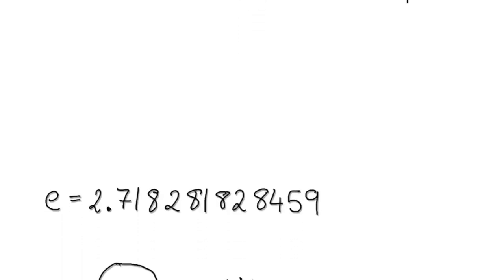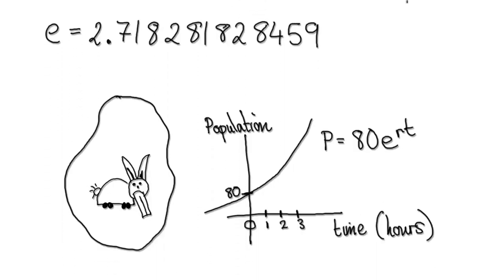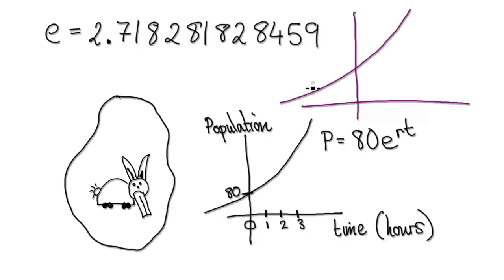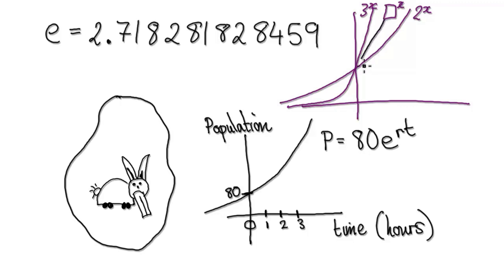In this video we're going to try and understand the number e and why it always occurs in nature. We know 2 to the power of x looks something like this, and 3 to the power of x looks something like this. There's a special base e in between 2 and 3 such that when you differentiate it, it would be its exact same self. That's the special property of the number e.